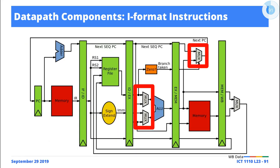The other thing to mention — even though this is not specific to I-format instructions alone, it is important for I-format instructions — is this hardware component called the multiplexer. So you notice that in the data path, you probably see there's a mux here, there's a mux here, a multiplexer here.